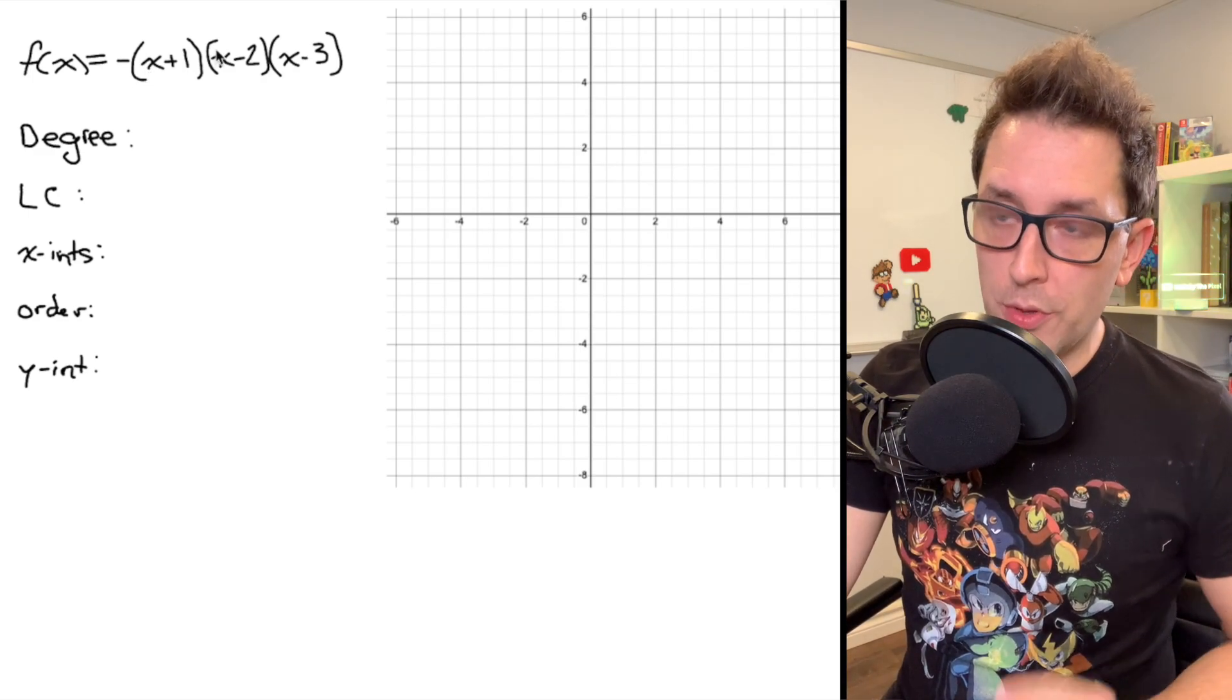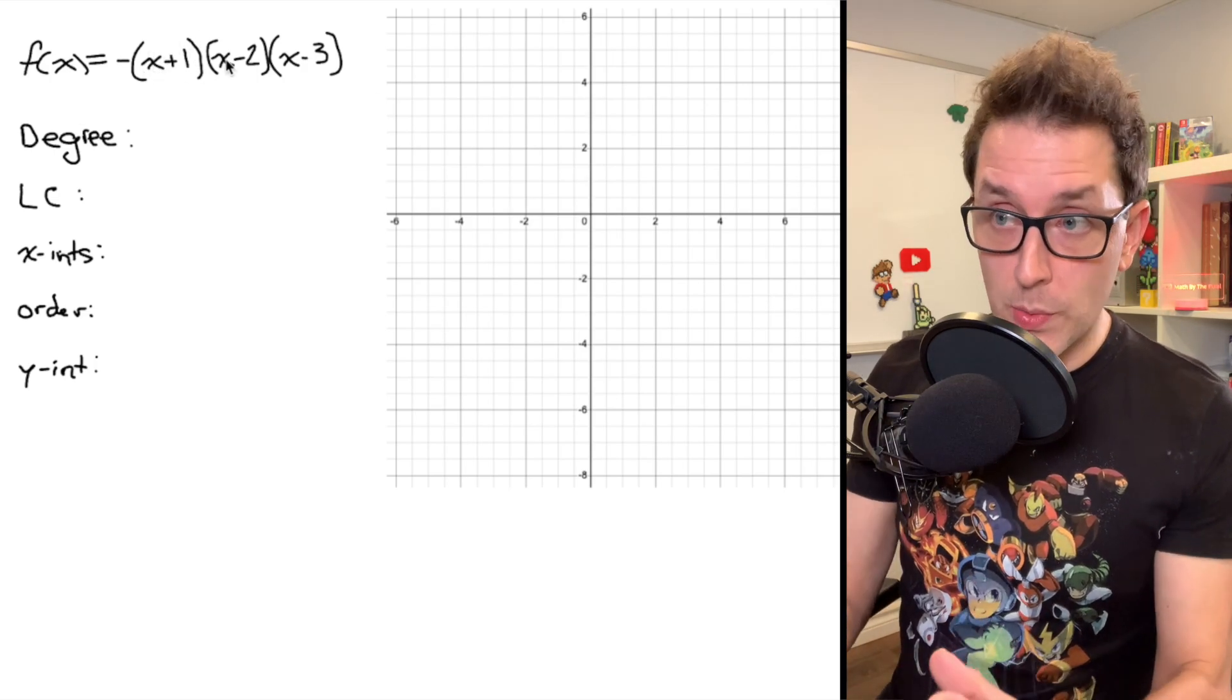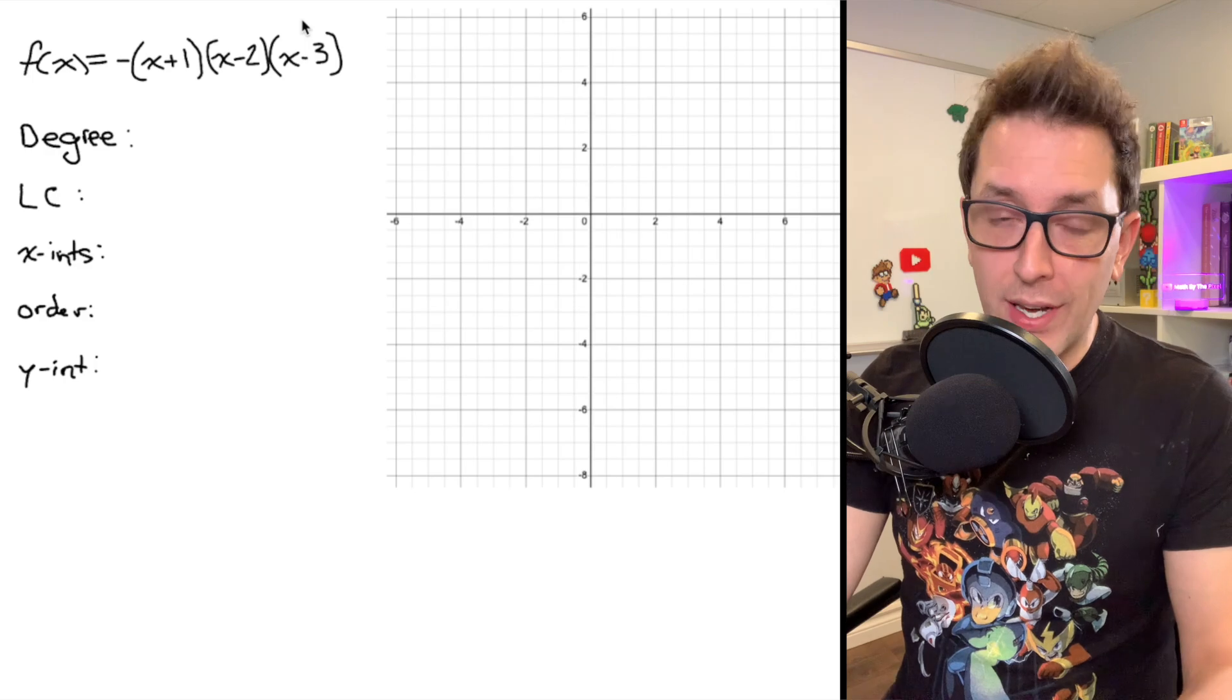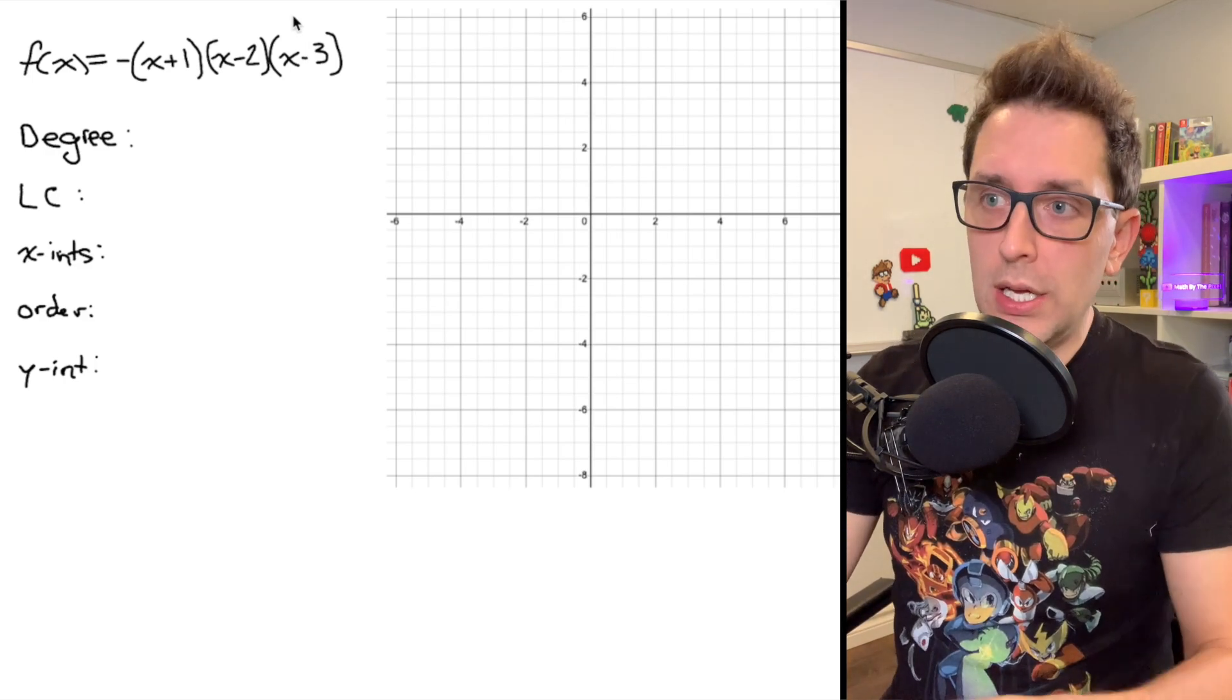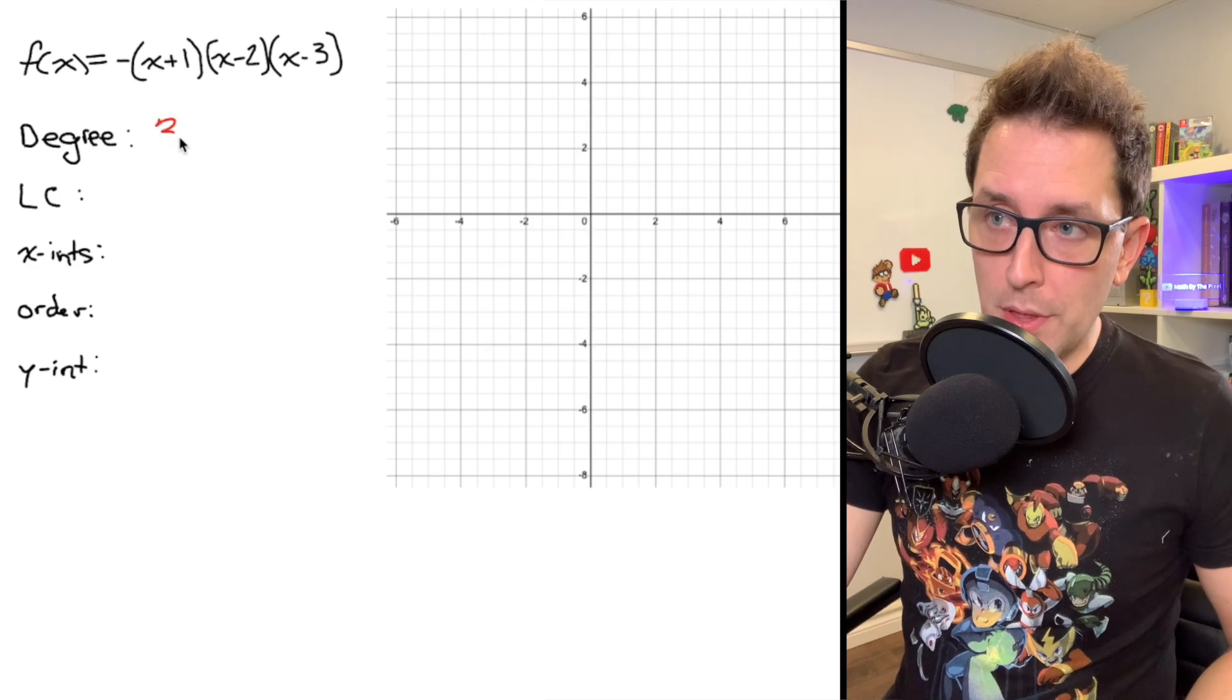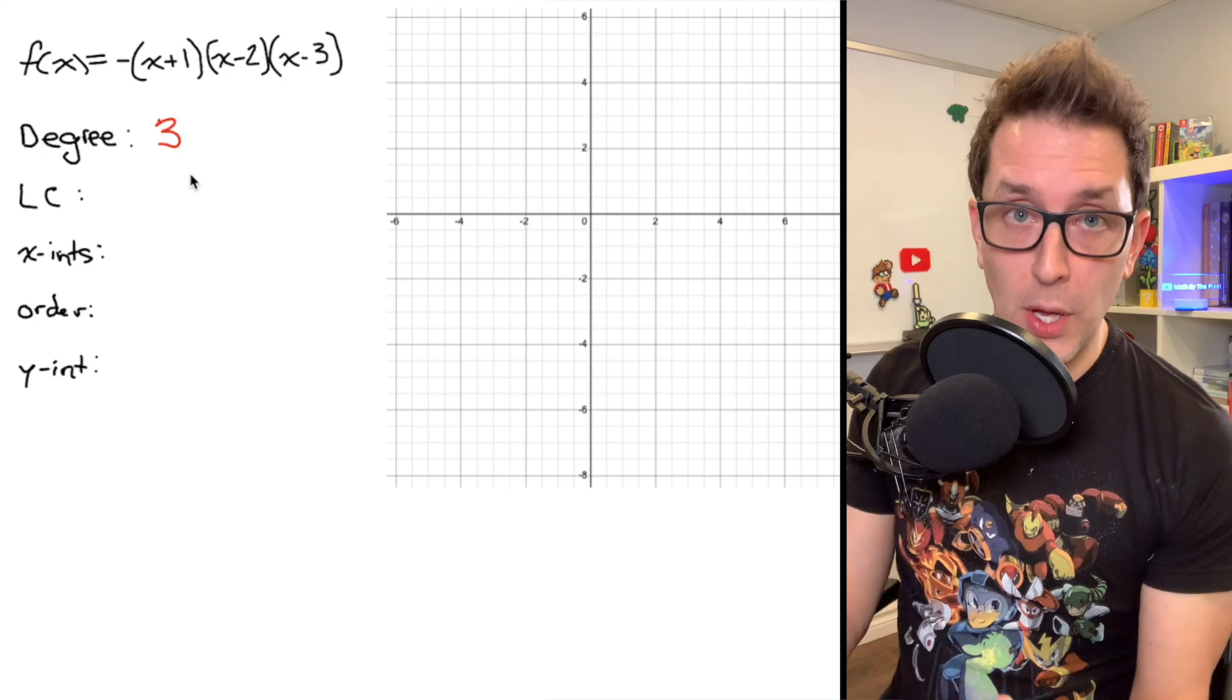What we can do to find the degree is just count up the number of x's that we have. And in this case we have 1, 2, 3 x's, and you can kind of picture if I was going to expand and simplify the product of these three binomials, the highest power I would have on x would be x to the power of 3. So the degree of this polynomial is going to be 3. That's the first key piece of information that we need to create a sketch of this polynomial.